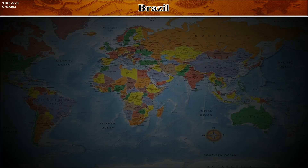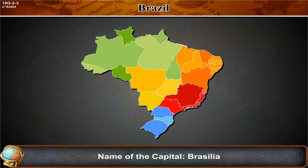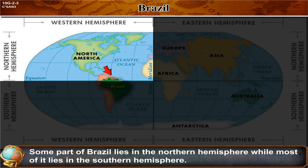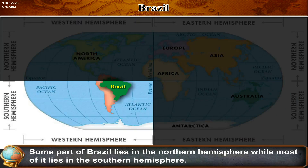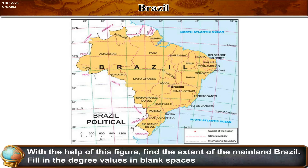Name of the country: Federated Republic of Brazil. Name of the capital: Brasília. Location, extent, and boundary — some part of Brazil lies in the northern hemisphere while most of it lies in the southern hemisphere. It also lies in the western hemisphere, in the northern part of the South American continent.